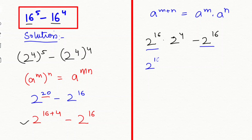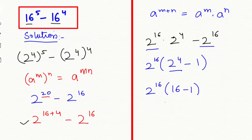Next I am going to take 2 to the power of 16 as common. So we get 2 to the power of 16, bracket, 2 to the power of 4 minus 1. Now I am going to solve 2 to the power of 4, which equals 16. So this will be equal to 2 to the power of 16 times 15.